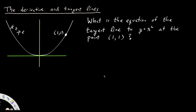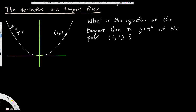We're going to begin today by answering the first real derivative calculus problem that you might see. The problem is: what is the equation of the tangent line to y equals x squared at the point (1,1)? I've drawn the parabola, which is the graph of the equation y equals x squared. The point (1,1) is on that parabola because 1 squared is equal to 1. This question is asking about the equation of the tangent line to the parabola at that point.